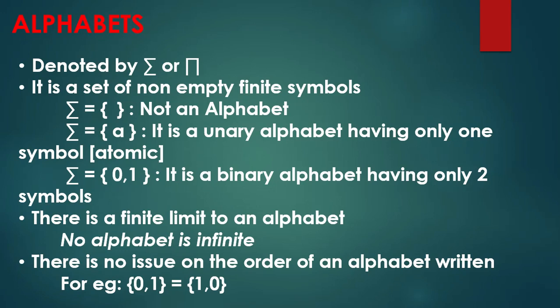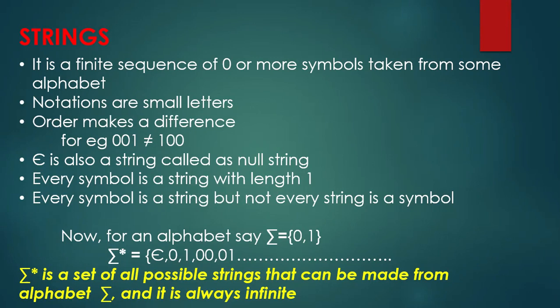There is no issue with the order of an alphabet. For example, the alphabet written as {0,1} can also be written as {1,0}. There is no fixed order of how an alphabet should be written. We have the English alphabet as a, b, c, d — the symbols remain the same regardless of order.